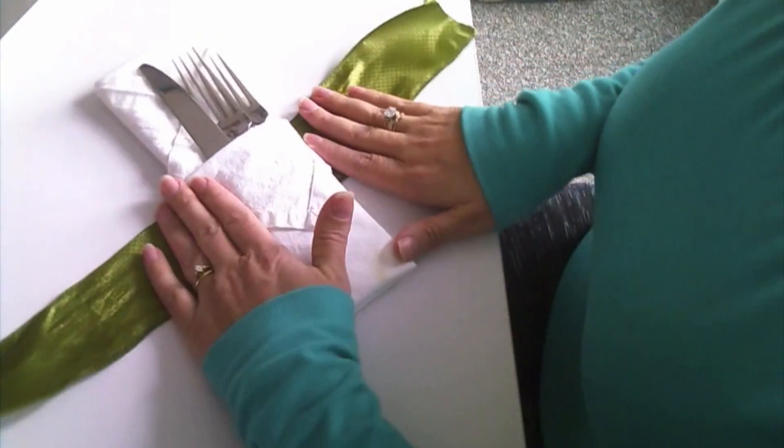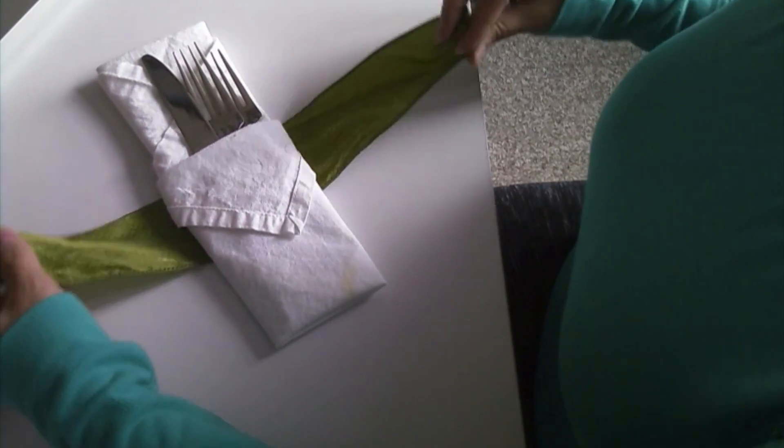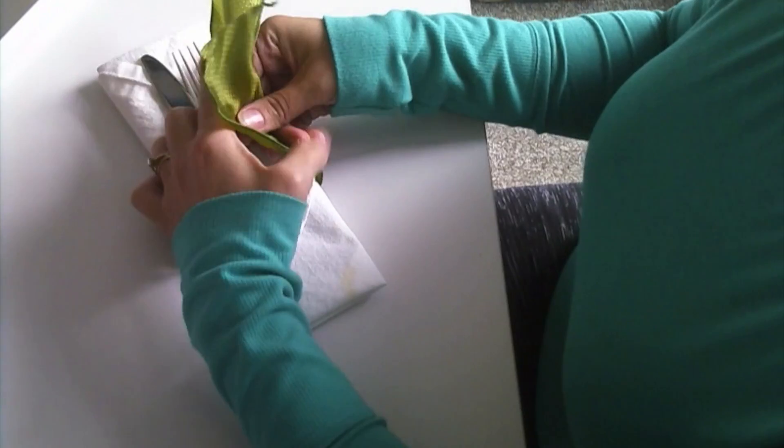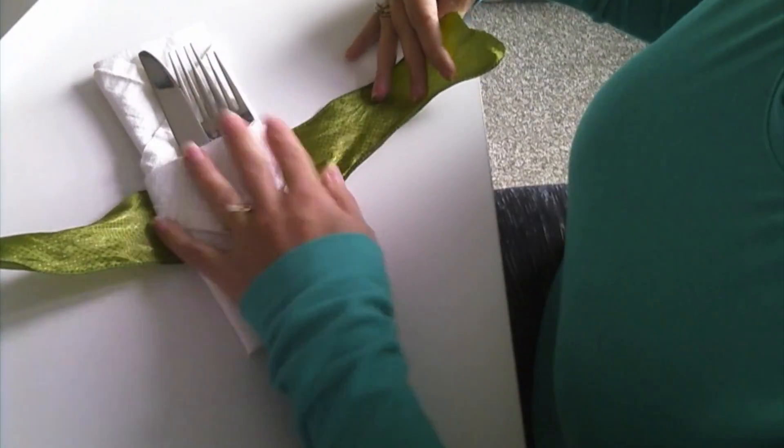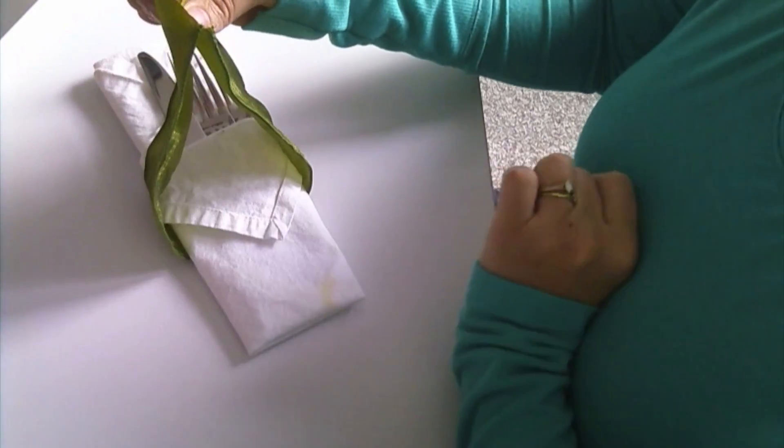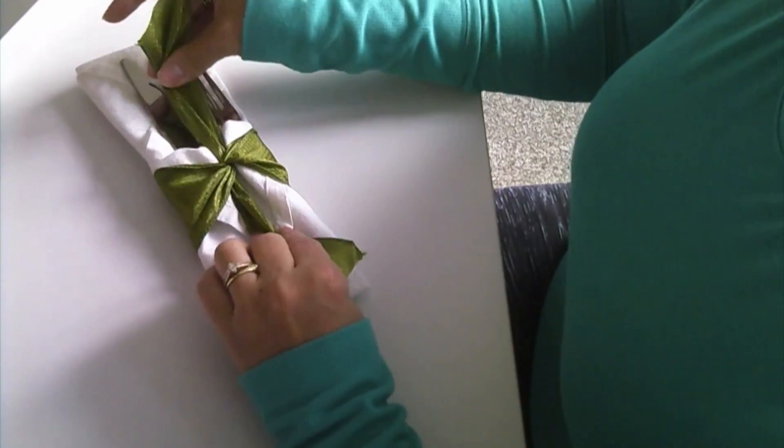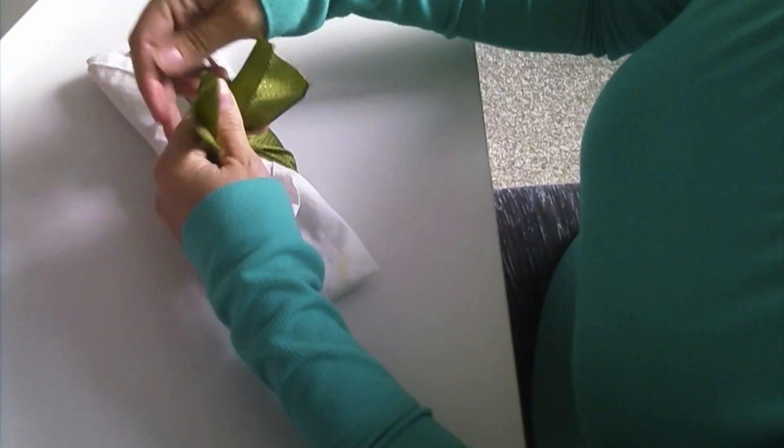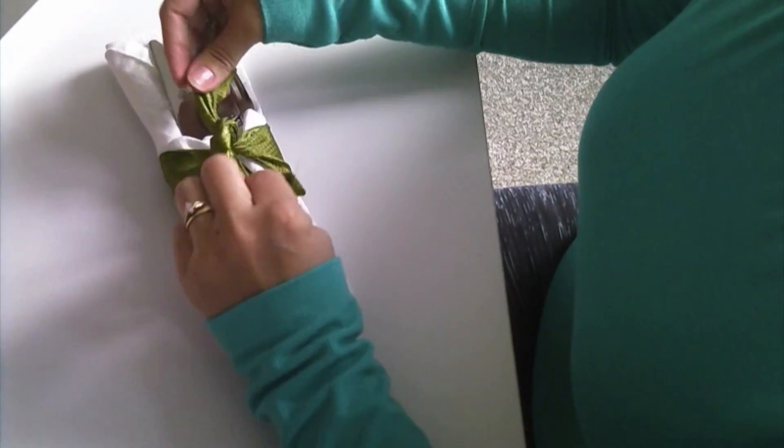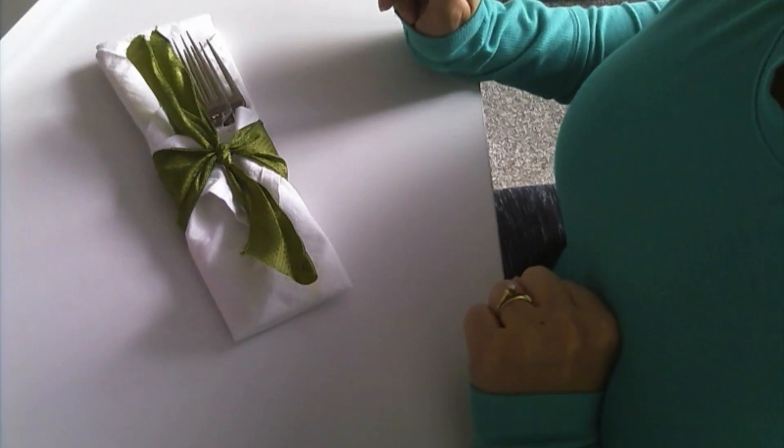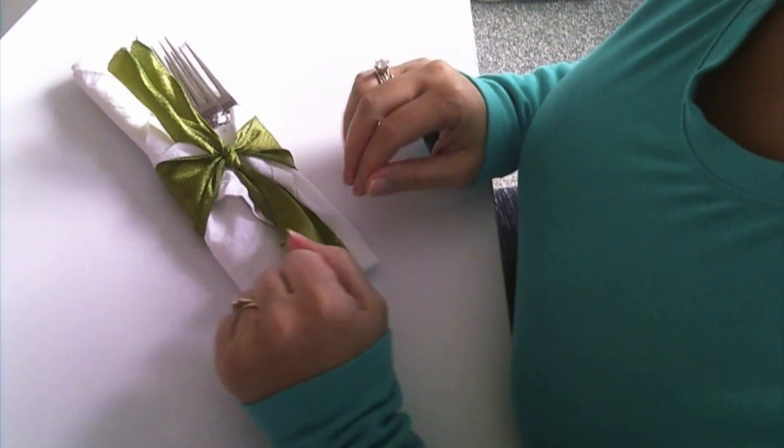Now what you're going to do is bring the ribbon around. I'm just making sure that my sides are even and then I'm just going to tie a double knot, so I'm going to tie one knot and then another knot just like that. Now the reason you want the wire ribbon is so that way you can then take and form this little bow.